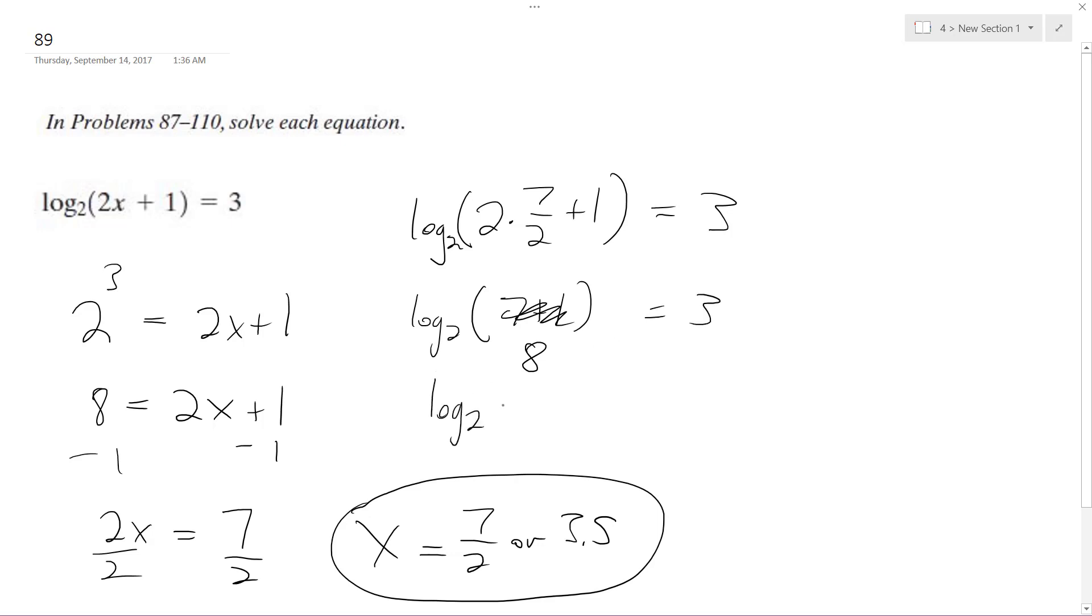Yeah, it's the same thing as log base 2 of 8 equals 3, which is the same thing as 2 raised to the third equals 8. So it's correct. x is equal to 7 over 2, or 3.5.